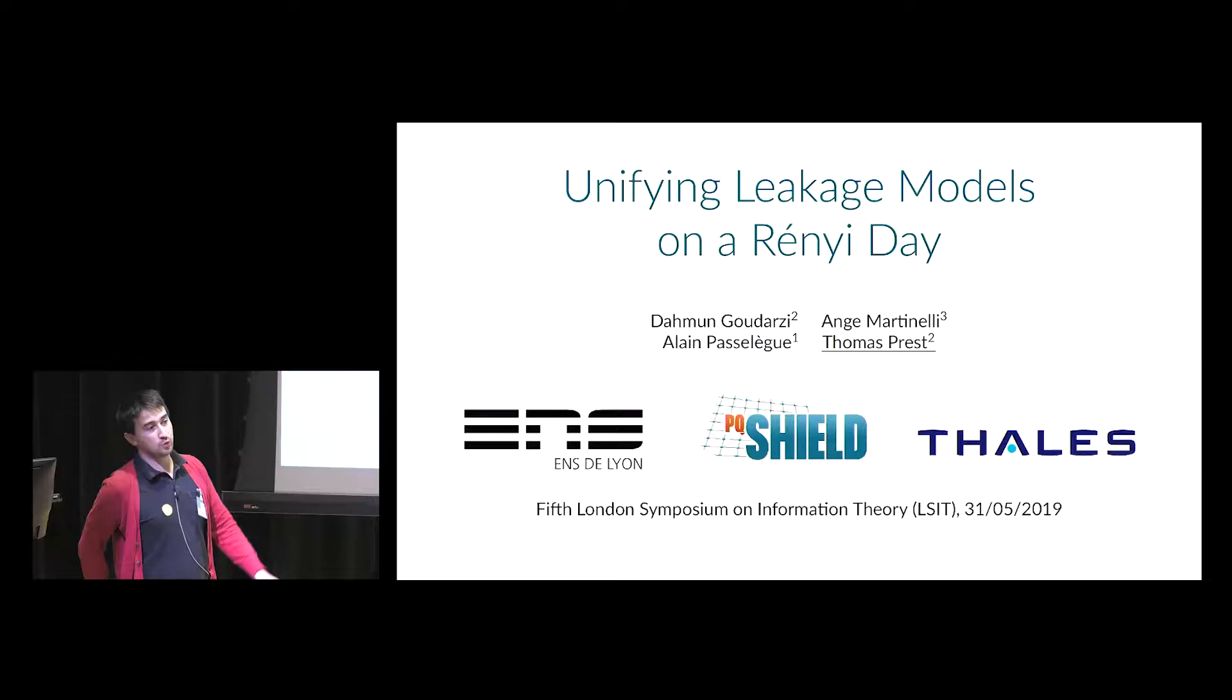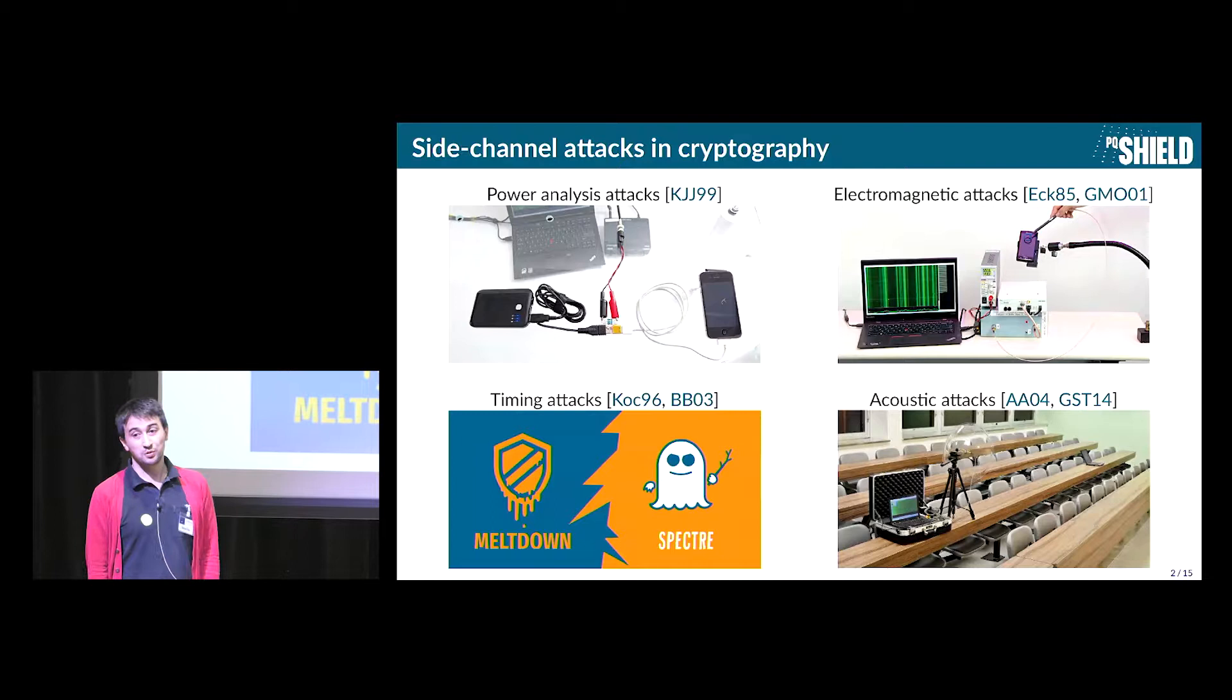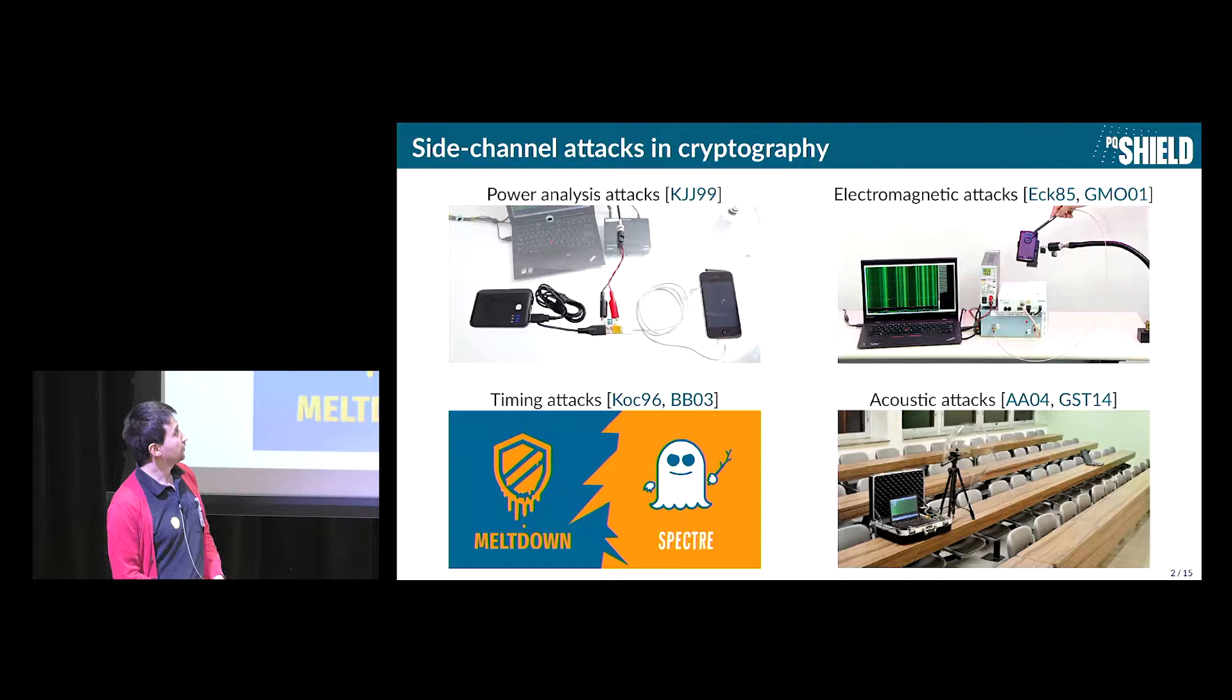I will be talking about leakage models in cryptography. So usually in cryptography we consider cryptosystems as black boxes where the adversary can interact with you only in a pre-specified way. So the adversary will give an input, you will give an output, and that's all the adversary is going to have. But unfortunately in real life this is not what happens. What is going to happen in real life is that the adversary is going to have the knowledge of side channels.